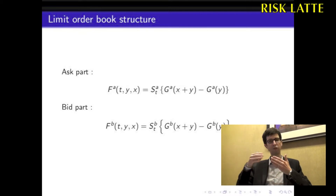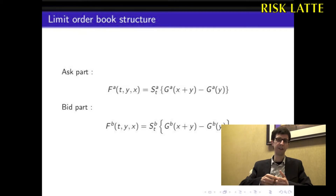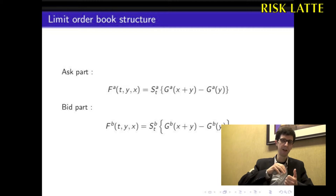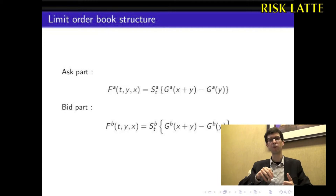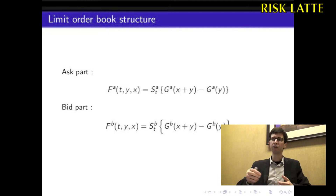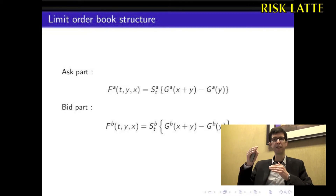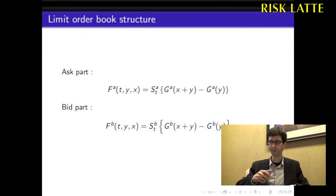As we saw in the example, when our investor trades using market orders, it creates a hole in the limit order book. It takes a while before new limit orders refill the limit order book. So the variable Y is going to be responsible for measuring how deep this hole in the limit order book is.